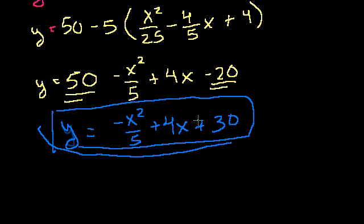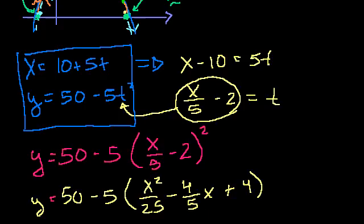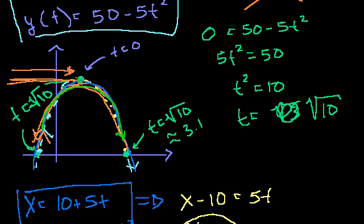Likewise, if I told you this was the path of the object, and then I asked you, where is the object after five seconds? You don't know. Because this just tells you where x is relative to y, or where y is relative to x. It doesn't tell you where you are after five seconds. So we've lost all of that information. We've lost the information that this is t equals 0, this is t equals 1, this is t equals 2, this is t equals 3, this is t equals the square root of 10. And that's why parametric equations are useful.